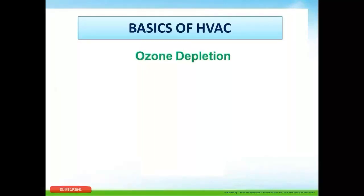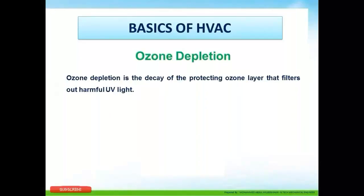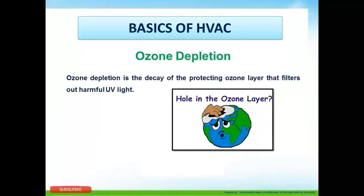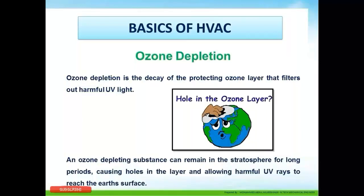Now let us understand ozone depletion and why CFC and HCFC refrigerants have been eliminated while HFC refrigerants are being used. Ozone depletion is the decay of the protective ozone layer that filters out harmful UV light from the sun. Due to the chlorine in older refrigerants, the ozone layer has been damaged and holes have formed. These ozone-depleting substances can remain in the stratosphere for long periods, causing holes that allow harmful UV rays to reach the Earth's surface.